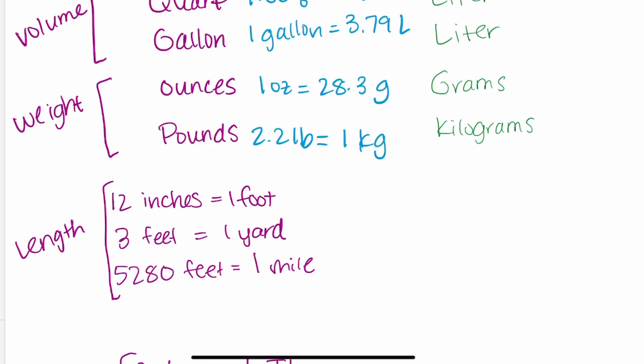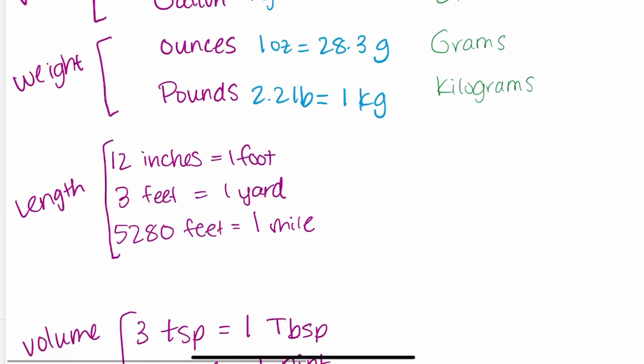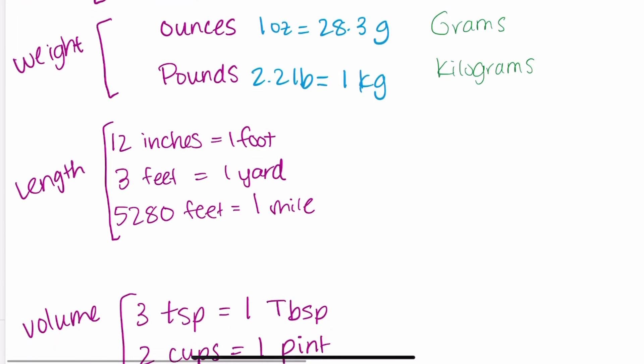Now when we move on here are some other really important conversions to memorize that are specifically within the standard system. So 12 inches is equal to one foot. That one's a pretty common one. You may already know that one. Three feet is equal to one yard and 5,280 feet are equal to one mile.